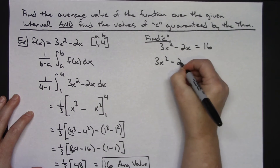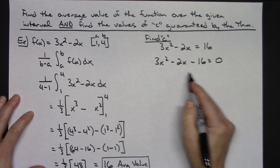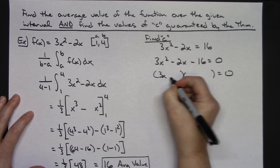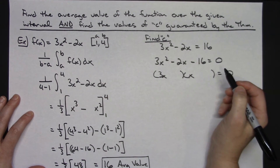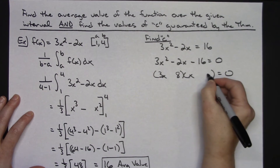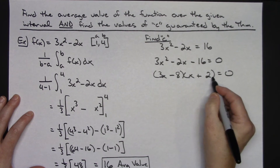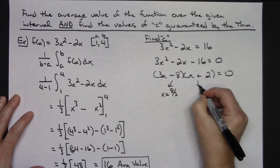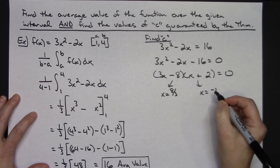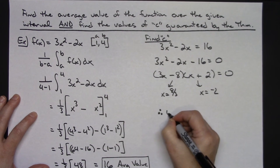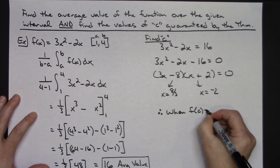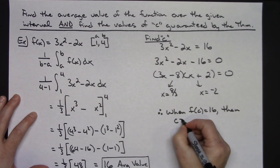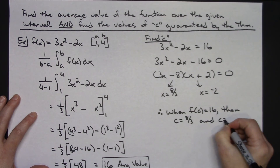So 3x squared minus 2x minus 16 equals zero. Let's try to factor that — if it doesn't factor, we'd use the quadratic formula. Using 3x and x, factors of 16: 8 and 2 works. Putting 8 here and 2 here, making one minus and one plus: negative 8 and positive 6 gives me negative 2 in the middle. Setting each factor equal to zero, x equals 8/3 or x equals negative 2. Therefore, when f(c) equals 16, the values of c guaranteed by the theorem are c equals 8/3 and c equals negative 2.